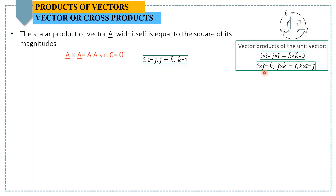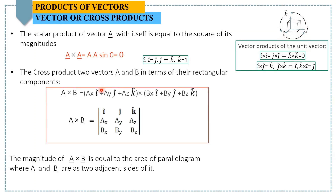For cross products of different unit vectors, following the cyclic order: i cross j equals k, k cross i equals j, and j cross k equals i. To compute the cross product of two vectors in component form, we write the determinant: a cross b equals the 3×3 determinant with row one as i, j, k; row two as ax, ay, az; and row three as bx, by, bz.